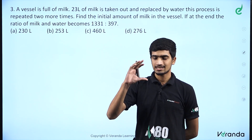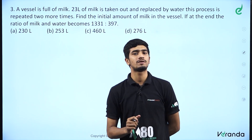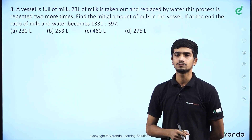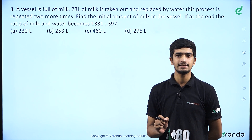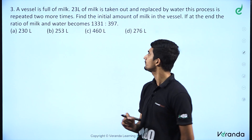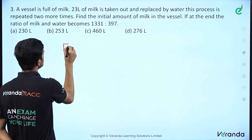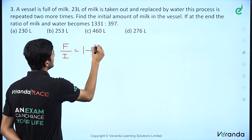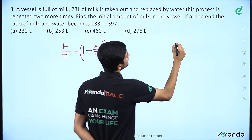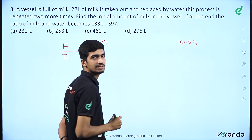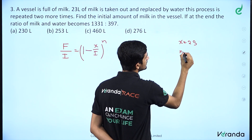Next question: a vessel is full of milk. 23 liters of milk is taken out and replaced by water. This process is repeated two more times, so n equals 3. At the end, the ratio of milk to water becomes 1331 to 397. Find the initial amount of milk.